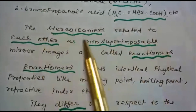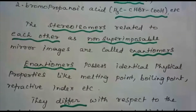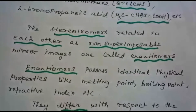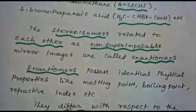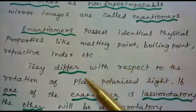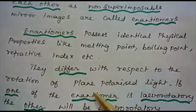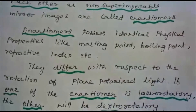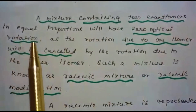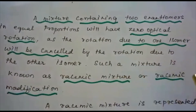The stereoisomers related to each other as non-superimposable mirror images are called enantiomers. Enantiomers possess identical physical properties like melting point, boiling point, and refractive index, but they differ with respect to the rotation of plane polarized light. If one enantiomer is levorotatory, the other will be dextrorotatory. A mixture containing two enantiomers in equal proportions will have zero optical rotation, as the rotation due to one isomer is cancelled by the other. Such a mixture is known as a racemic mixture or racemic modification.